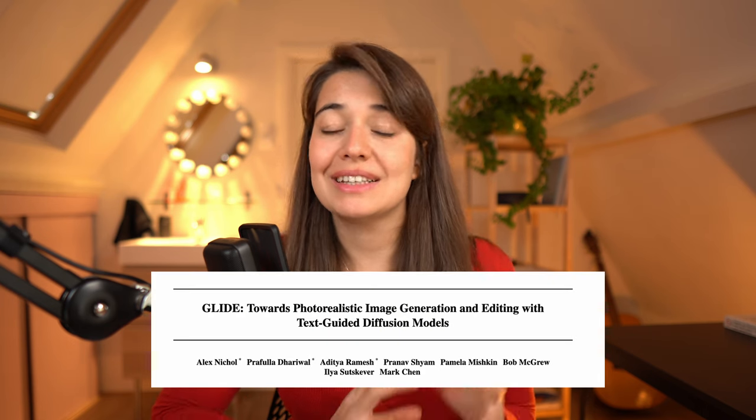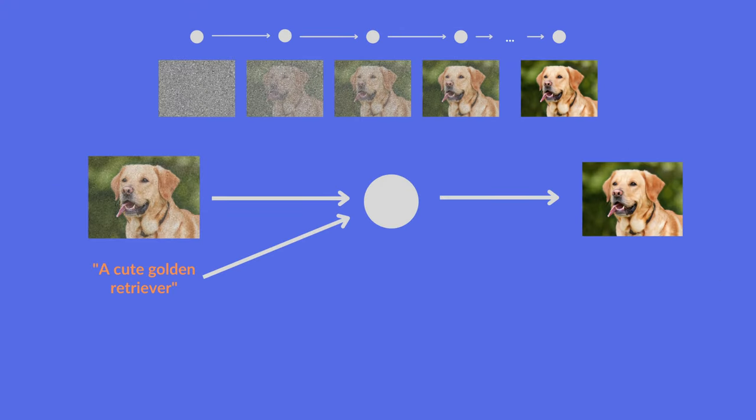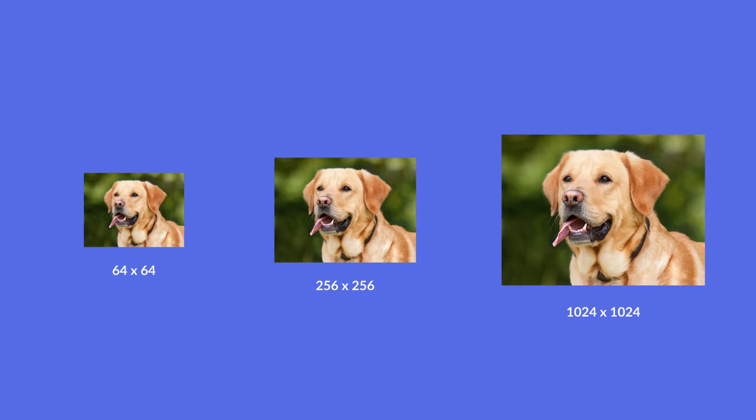In DALL-E 2, the decoder is also a diffusion model, but an adjusted one. The authors use another model created by OpenAI called Glide. Glide is itself an image generation model, but differently from a pure diffusion model, it also includes the embedding of the text given to the model to support image creation. In DALL-E 2, the decoder is set up so that it includes not only the text information like in Glide, but also the CLIP embeddings to support image generation. After a preliminary image is created at 64×64 pixels, there are two upsampling steps to make the images high resolution. This is how image generation works with DALL-E 2.